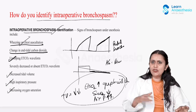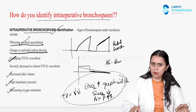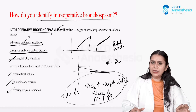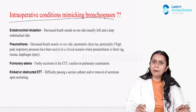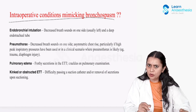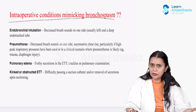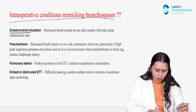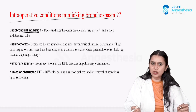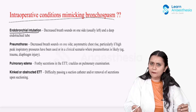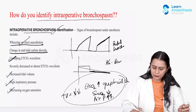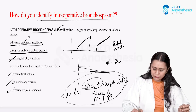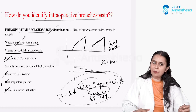There are a number of intraoperative conditions which can mimic bronchospasm, so we need to rule out those differential diagnoses. The first is endobronchial intubation, where the tube has gone into one of the bronchi. That will also present with increased EtCO2, decreased saturation, and upsloping of the plateau phase.